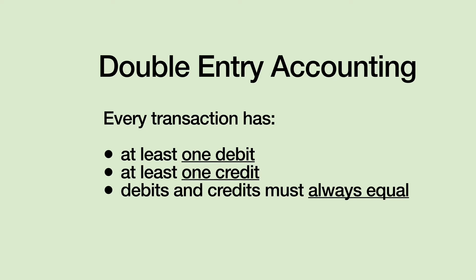This is called double-entry accounting. Double-entry accounting is referring to one or more debit effects and one or more credit effects. So if there are three numbers in a transaction, that's still double-entry accounting because we're referring to the concept of debits and credits.